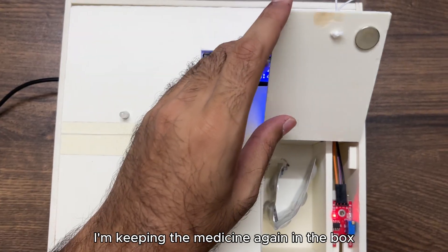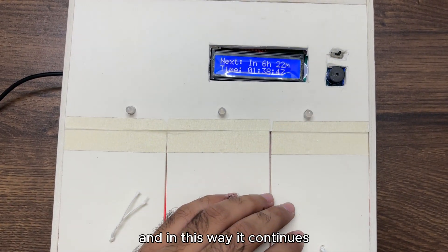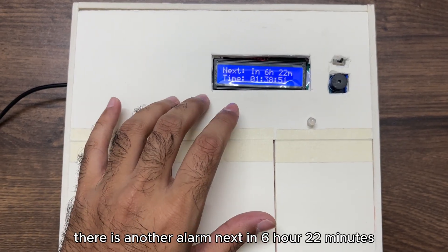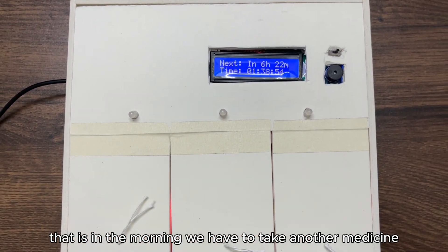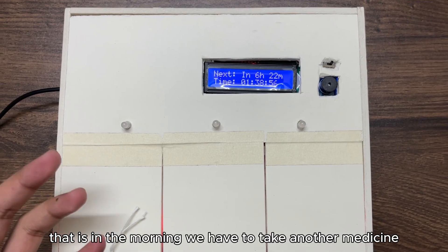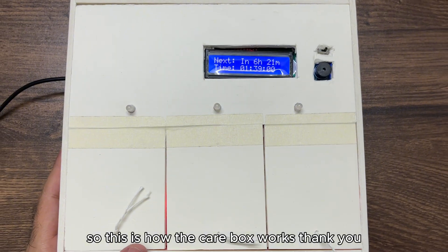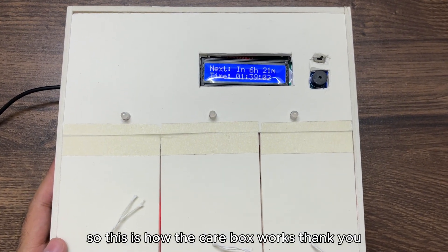In this way it continues. We can see there is another alarm next in 6 hours 22 minutes. That is in the morning we have to take another medicine and this is showing in the schedule. This is how the Care Box works. Thank you.